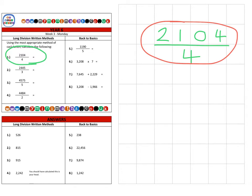This can also be written as 2104 divided by 4, and for the benefit of calculating the question we're going to use the short method today as we're only dividing by this single digit. So, 2104 divided by 4.